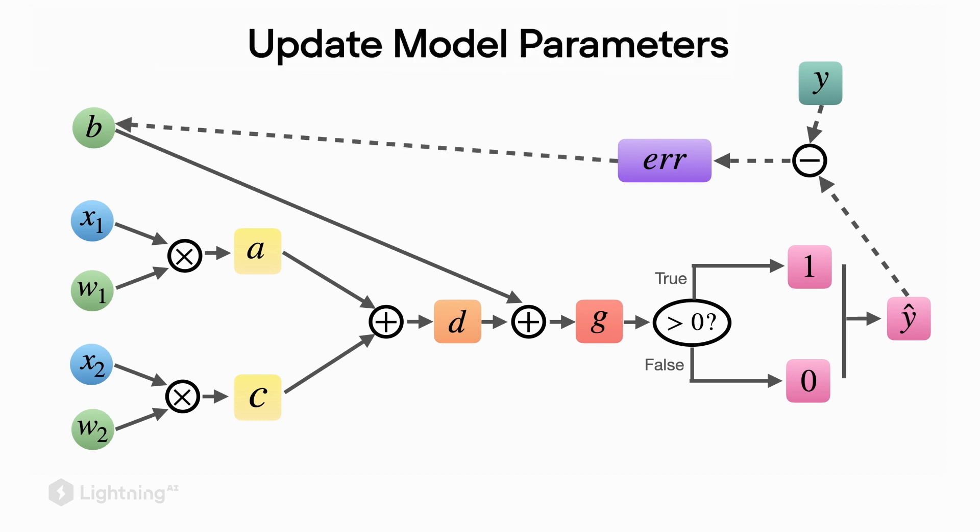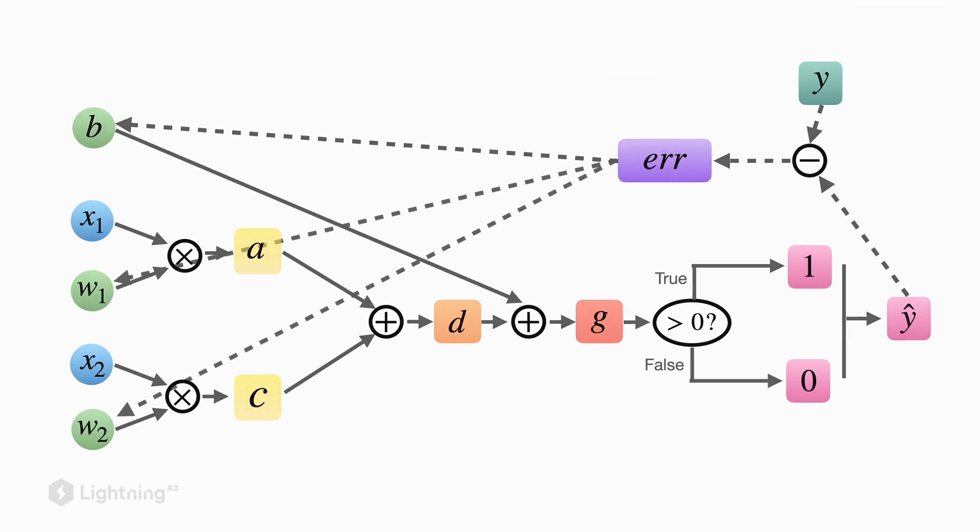For instance, we update the bias unit and the weight parameters. This, in essence, is the computation graph of the perceptron model. We will revisit computation graphs in upcoming units when we introduce new types of neural networks.